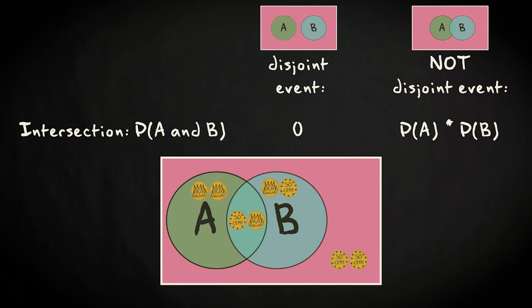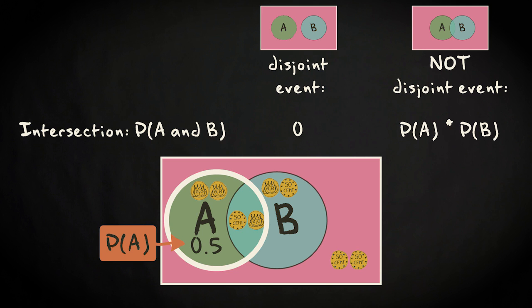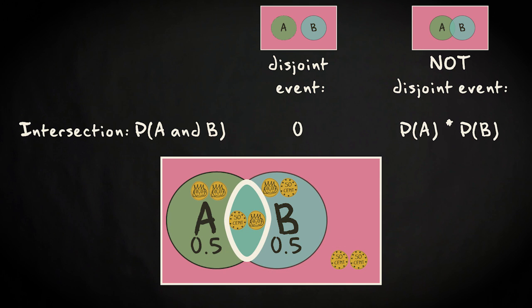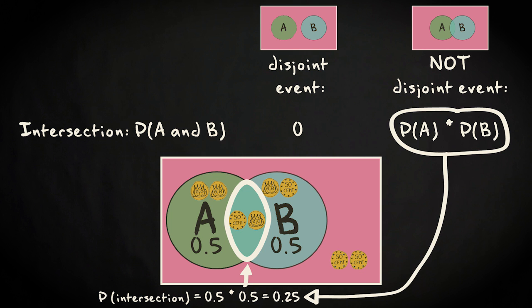Here there are two cases in event A, so the probability that A occurs is two-fourths. And the same holds for event B. So the probability for the intersection results from multiplying the two probabilities leading to one-fourth.